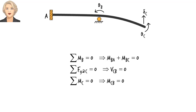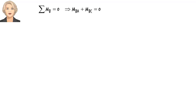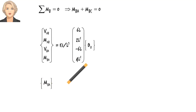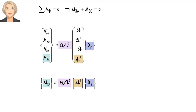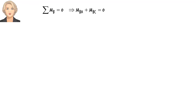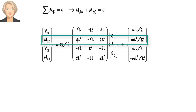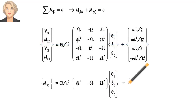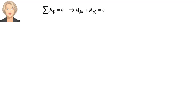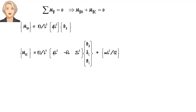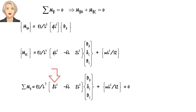Let's expand them using member matrices. In the first equation, we have M_BA and M_BC. We find M_BA in the equations for member AB, and here is M_BA in matrix form. For M_BC, we need the equations for member BC, and here is M_BC in matrix form. The two terms in the first equilibrium equation are added together: this is the sum of coefficients for theta_B in M_BA and M_BC, this is the sum of coefficients for delta_C, and this is the sum of coefficients for theta_C.